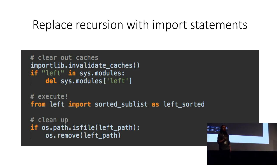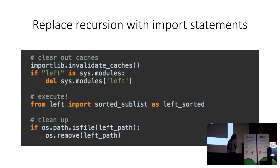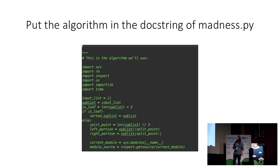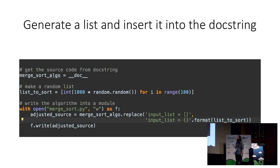We're really close. All we have to do now is create the top-level madness module that kicks this whole thing off. Madness needs access to the source code of this implementation so it can write out the starter merge sort module. To make things easy, let's follow some common Python advice: it's a good idea to make your code self-documenting. Let's do that by taking the entire implementation of merge sort and jamming it directly into the docstring of madness.py with a helpful comment. This is really useful because Python gives you runtime access to the docstrings of modules — so madness can read in this implementation out of its own documentation, then generate the random list of numbers and write that out into our new merge sort module.